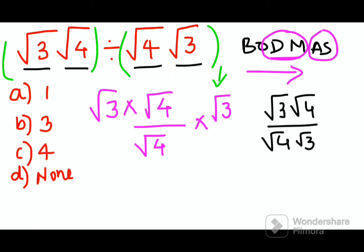And now solving this further, root 4 and root 4 cancels. So you are just left with root 3 into root 3. So your answer is just root 3.